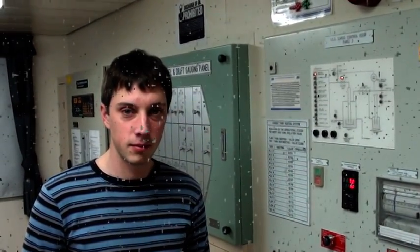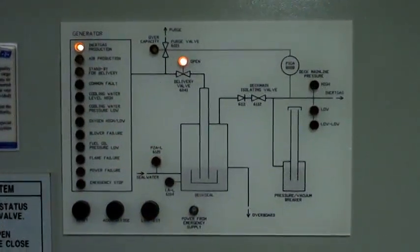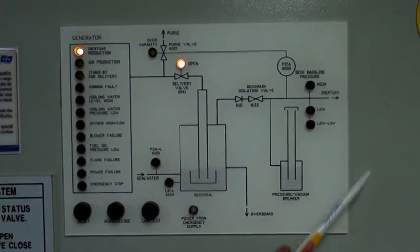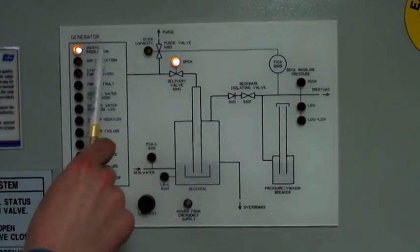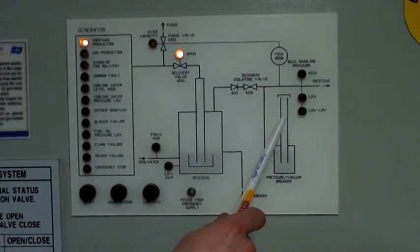Inert gas control panel. The control panel consists of a diagram with indications of different parameters.